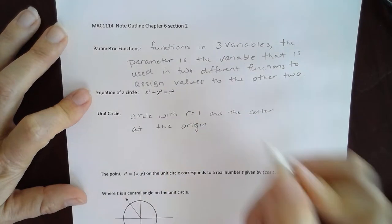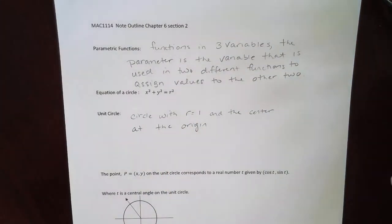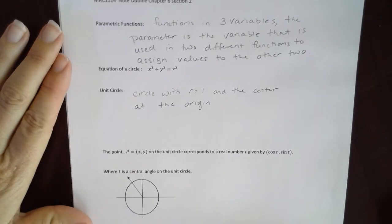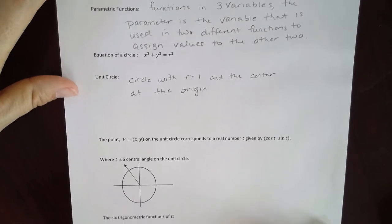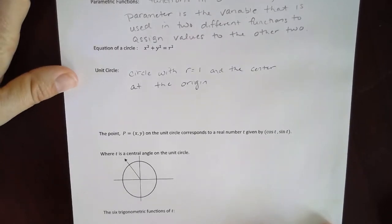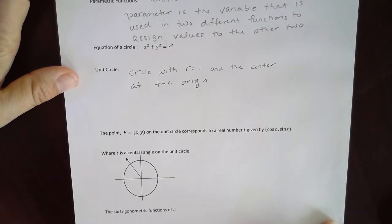Now where the parametric equation comes into play here is that our unit circle values are going to be determined by an angle. So t, we're going to use to represent the angle initially.